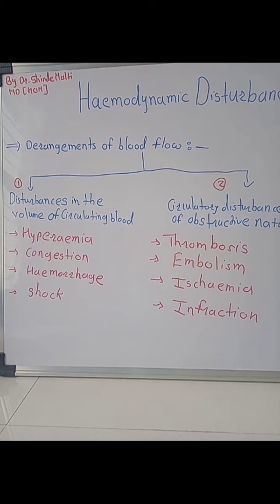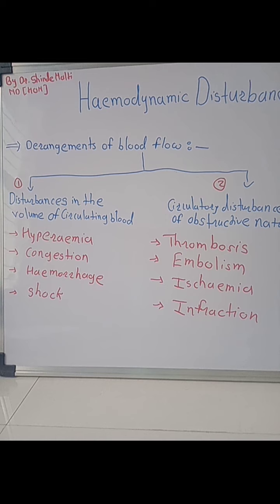The first requirement is normal anatomic features — there must be a normal anatomical structure of arteries, vessels, veins, and the organs involved in the circulatory system. The second factor is normal physiologic control, meaning the organs involved in circulation must have proper physiological control. The third important factor is normal biochemical composition of the blood, which is essential for normal circulation.